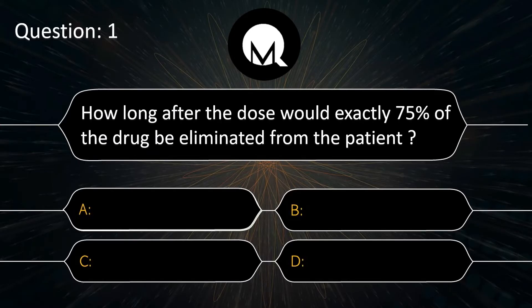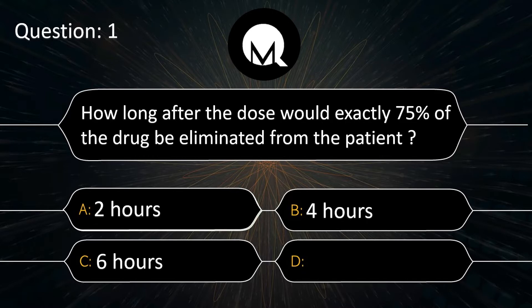How long after the dose would exactly 75% of the drug be eliminated from the patient? 2 hours? 4 hours? 6 hours? 8 hours?